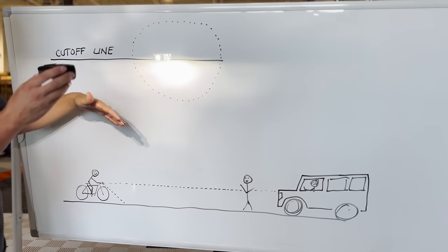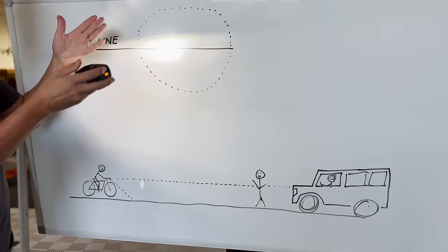So a cutoff line is basically an imaginary line where the light is cut off from going above. What does this mean?